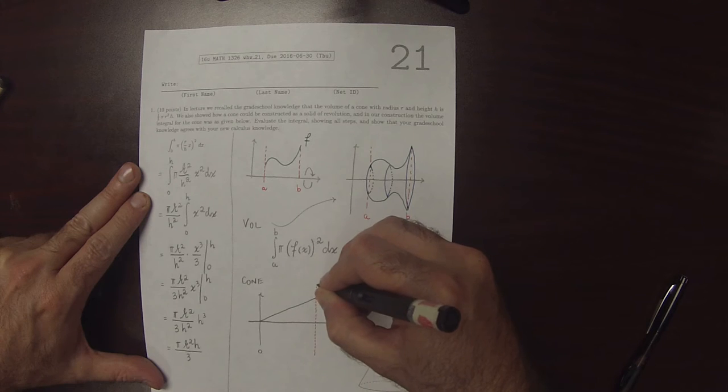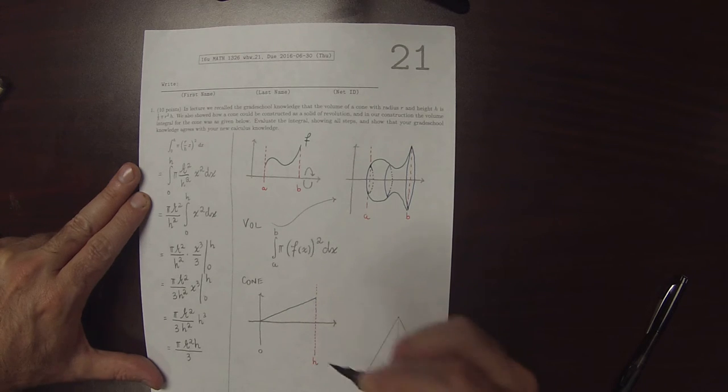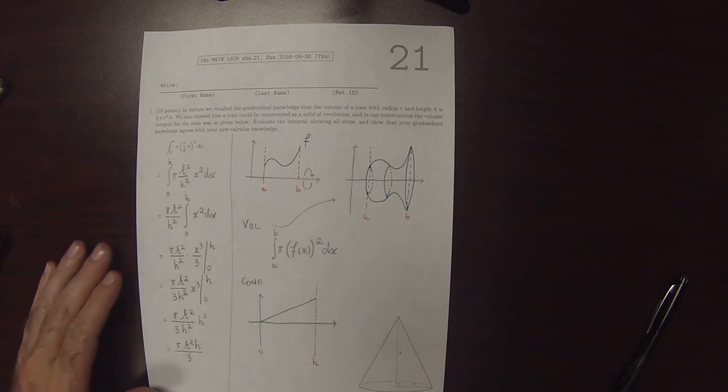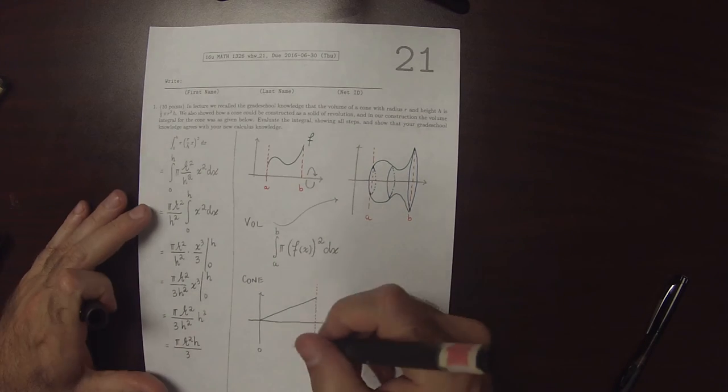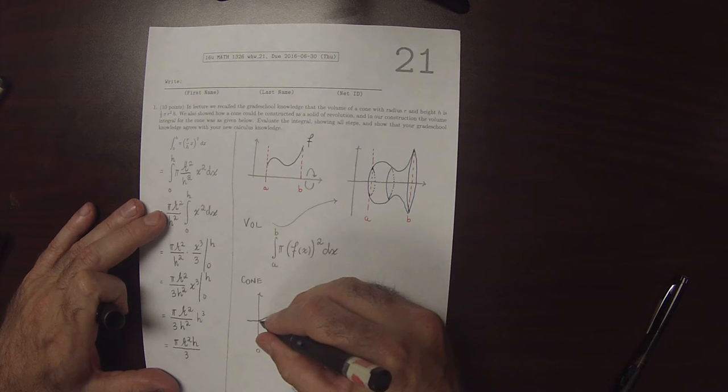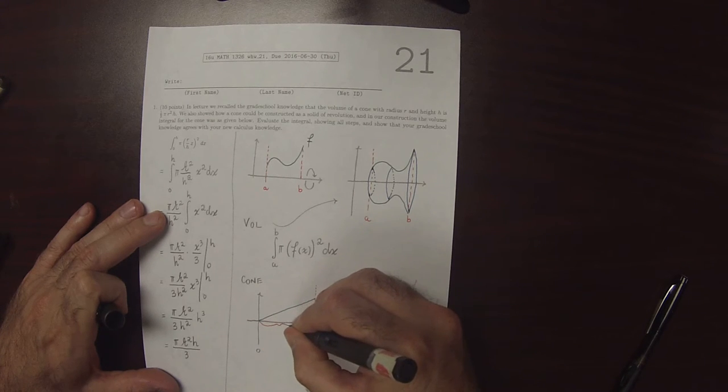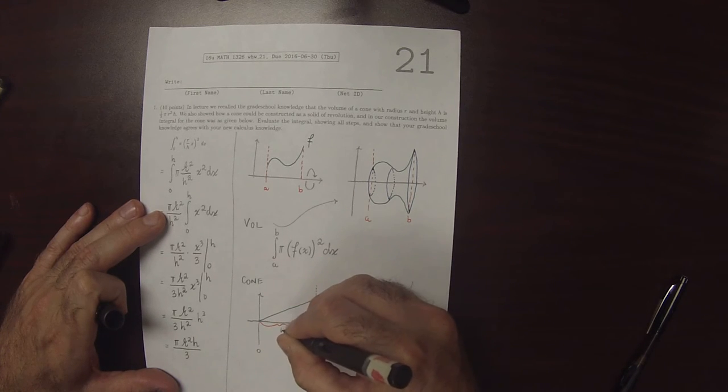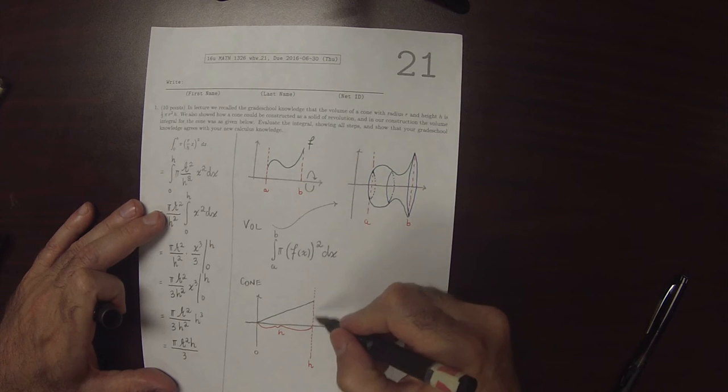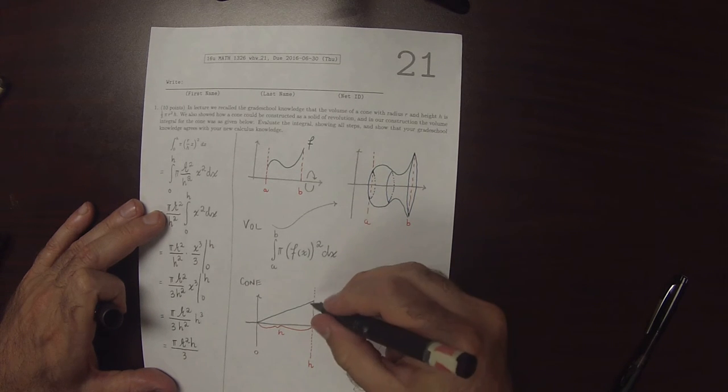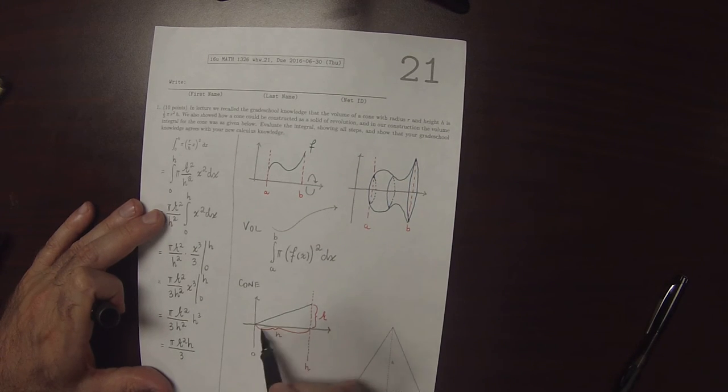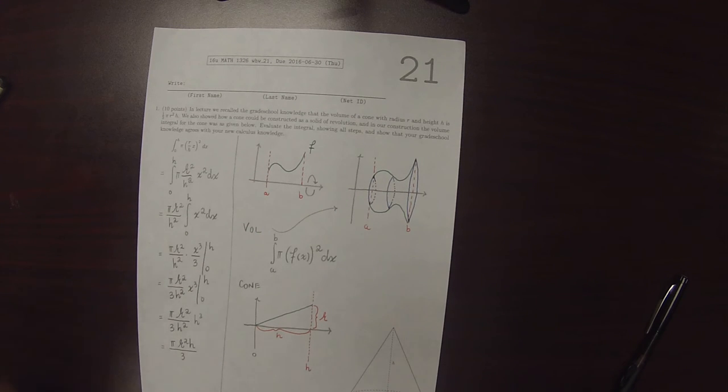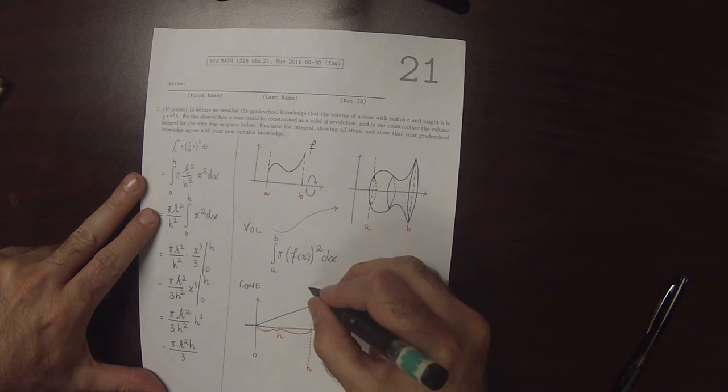The height of the cone needs to be at h. So this distance here is h.